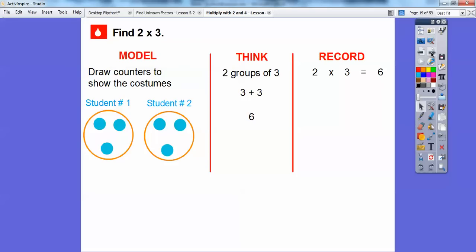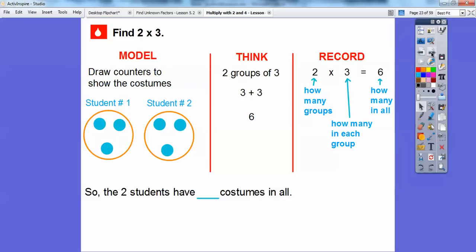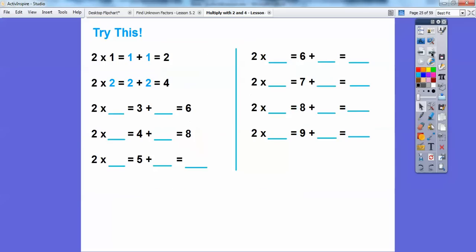So two groups of three is the same as just 3 plus 3, which is just 6. And so when we record this, we're going to go 2 times 3. The 2 stands for how many groups there were, two students. And then the 3 stands for how many in each group, each student had three costumes. And then 6 is how many in all. So 6 is our product right there. The two students have 6 costumes in all. Easy enough.